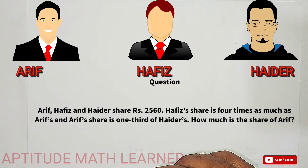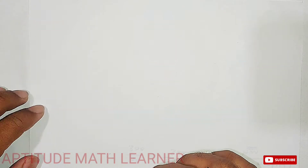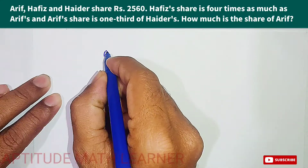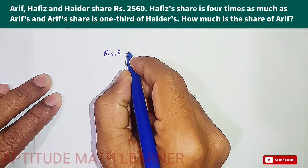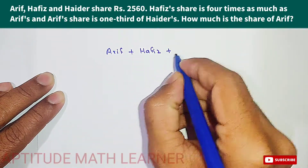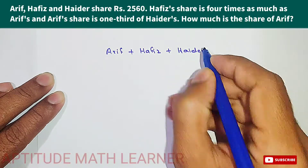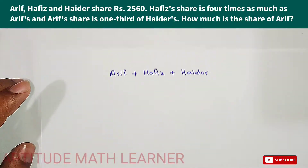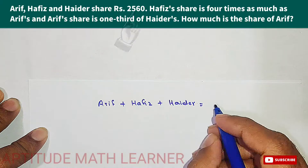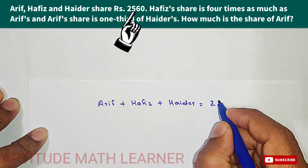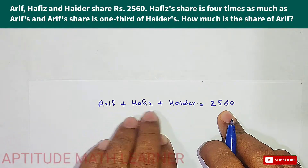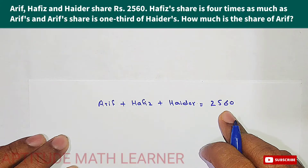Here we have three persons: Arif, Hafiz, and Hader. We need to find the share of each of the three. The total share of all three is given in the question, that is two thousand five hundred and sixty.